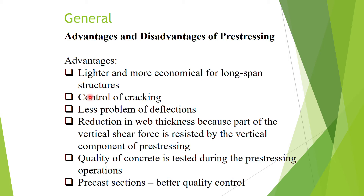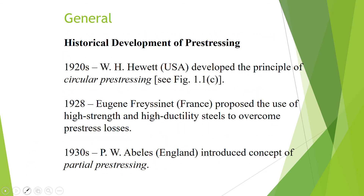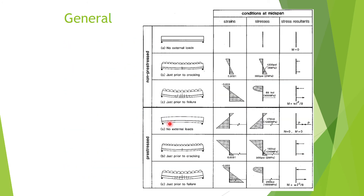Thirdly, we may have fewer problems with deflections. Because pre-stressing creates some negative, upward deflection before the external load is placed, when the imposed load causes downward deflection, the initial upward deflection compensates for it. In this manner, we can control the overall deflection.